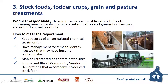The third element is stock foods, fodder crops, grain and pasture treatments. The producer's responsibility is to minimise exposure of livestock to foods containing unacceptable chemical contamination and guarantee livestock are not fed animal products. You need to keep records of all agricultural chemical treatments — things like treating pastures, crops and fodder — have management systems to identify livestock that may have become contaminated, map or list treated or contaminated sites on your property, and source and file commodity vendor declarations that accompany introduced stock feed. If you're purchasing stock feed, always ask the supplier to provide a commodity vendor declaration — these are available on the ISC website.